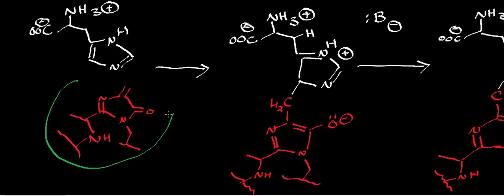This is the cofactor that we're going to use to deaminate histidine — in other words, we're removing ammonia and in the process forming an alkene. The first mechanistic step is ligation of the imidazole ring of histidine to the methylidine imidazolone cofactor. This lone pair kicks in here from a pi bond, and this pi bond attacks the carbon that's part of the alkene, forcing these pi electrons in here and these pi electrons onto the oxygen, generating an enolate.